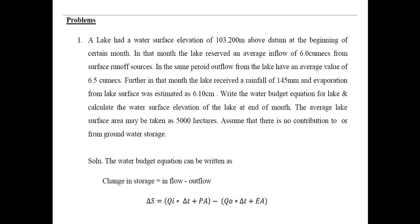In this problem we will calculate the water surface elevation of the lake at the end of the month and write the water budget equation. The given data: water surface elevation is 103.200 meters above the datum at the beginning of the month. Average inflow is 6 cubic meters per second from surface runoff sources. Outflow has an average value of 6.5 cubic meters per second. The lake received 145 mm of rainfall, and evaporation was estimated at 6.10 cm. Average lake surface area is 5,000 hectares.